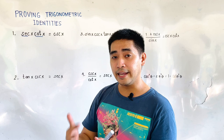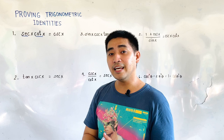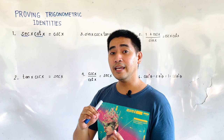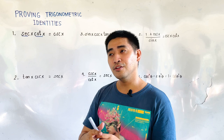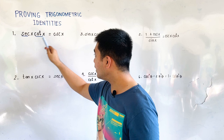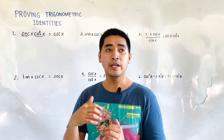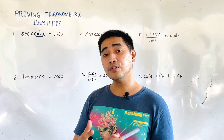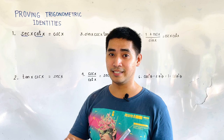When choosing the side to manipulate, we pick the side with more terms because that is the side we can more easily work with to match the other side. Also, remember that when proving an identity, reduce all the terms as much as possible to sines and cosines. The simplified forms of all the terms must be in sines and cosines.